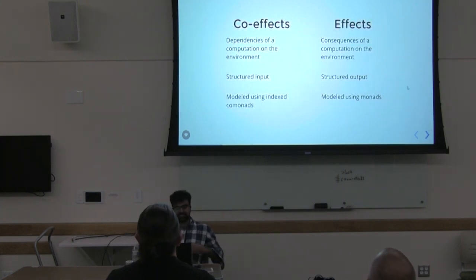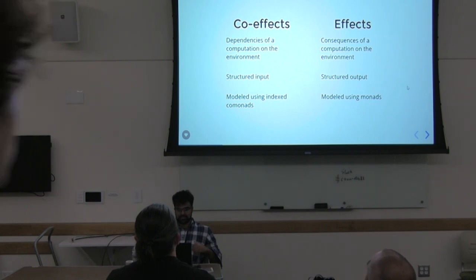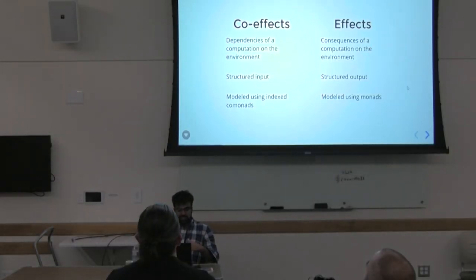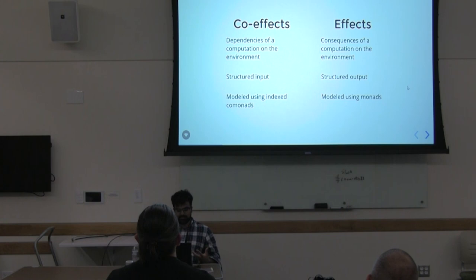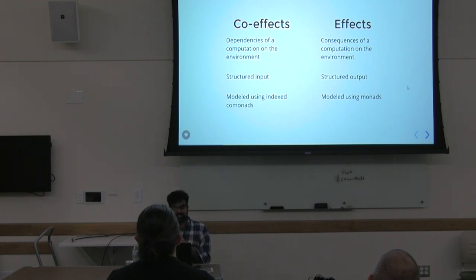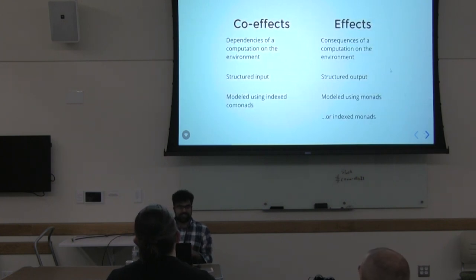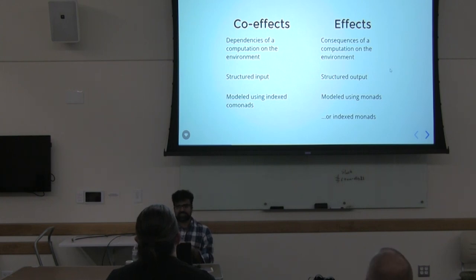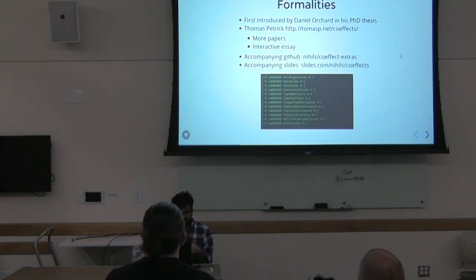Co-effects, on the other hand, are dependencies of the computation on the environment. Instead of having an environment on your output, you have an environment on your input — a structured input — and it can be modeled using indexed comonads. There's no real reason for this asymmetry between monads and indexed comonads, because you can in fact model effects using indexed monads and get more precise type guarantees for your monadic computations.